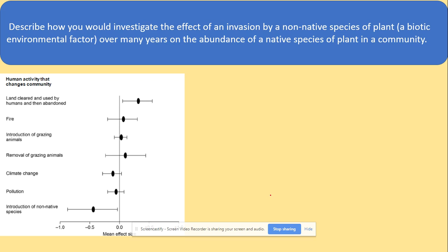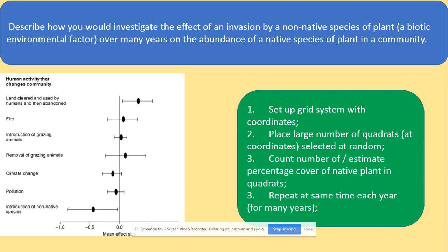Another question asks you to describe how you would investigate the effect of invasion by a non-native species on the community — same question as before but with a graph. The answer is the same: set up a grid with coordinates, place a large number of quadrats at random, count the number or estimate percentage cover of native species, and repeat at the same time each year for many years.